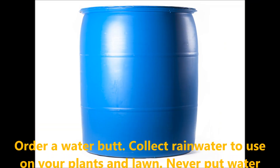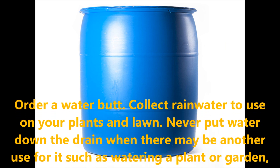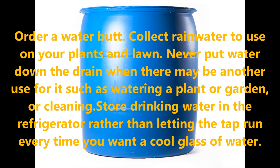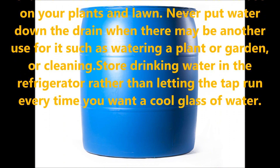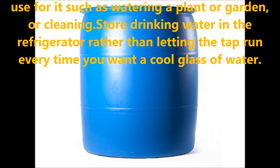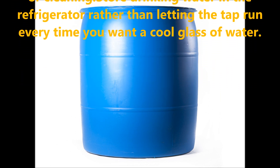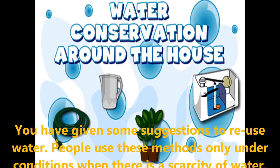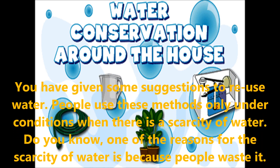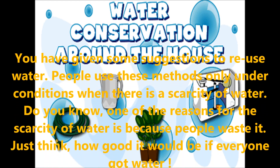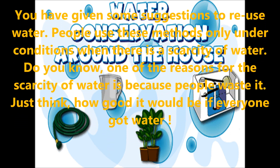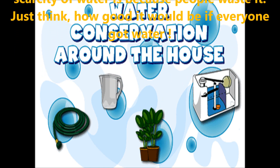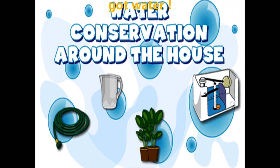Order a water butt and collect rainwater to use on your plants and garden. Never put water down the drain when there may be another use for it, such as watering plants or gardening. Store drinking water in the refrigerator rather than letting the tap run every time you want cool water. Children, these suggestions help us reuse water. People use these methods especially when there is scarcity of water. Do you know one of the reasons for water scarcity is because people waste it? Just think how good it would be if everyone got enough water.